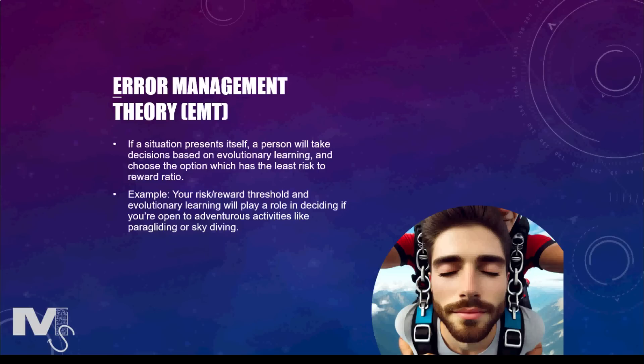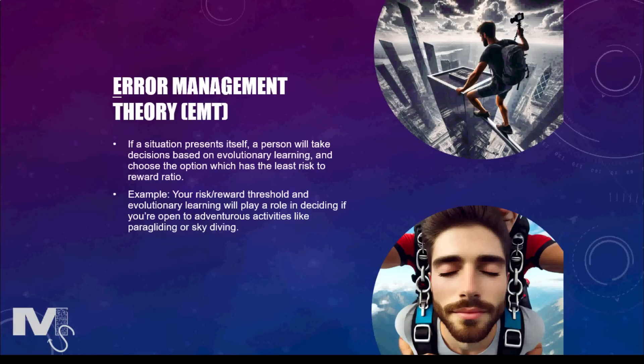This is because people who pursue such activities have a lower risk-to-reward threshold, and evolutionary psychology and the choices made by their ancestors play a role in their decision-making. Have you ever seen YouTube videos of people jumping off bridges or walking at the edge of skyscrapers without harnesses? Your brain is programmed to choose the safer option and to consider such activities as foolish and dangerous. The aspect of error management theory that deals specifically with heights is called the visual descent illusion.